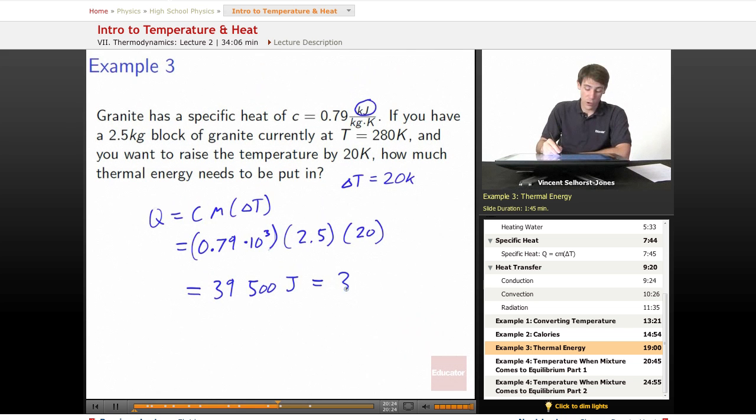we just divide by 10 to the third, move that decimal over by three, 39.5 kilojoules. Either way you want to look at it, same thing.